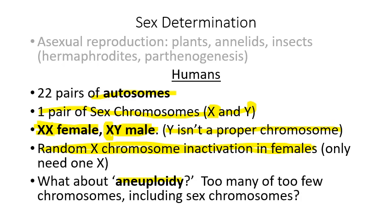This relates to aneuploidy — having an odd number of chromosomes. If you have no Y chromosome, the default pathway is to develop as female. Two X's: female. One X and nothing (XO): also female, known as Turner syndrome. Two X's and one Y: male, called Klinefelter syndrome. Three X's and no Y: female, called triple X syndrome. The presence of the Y makes you male; absence of Y makes you female by default.